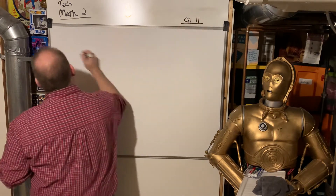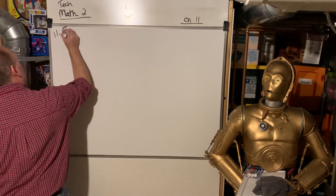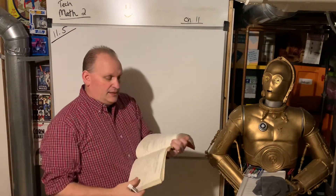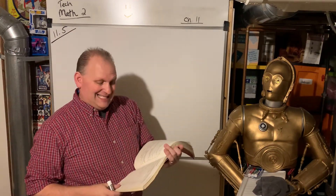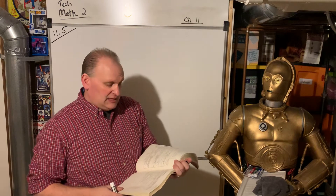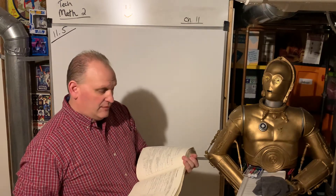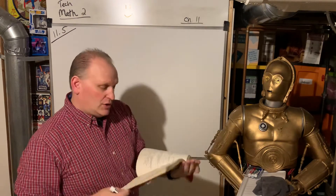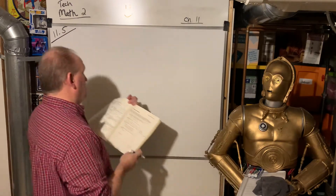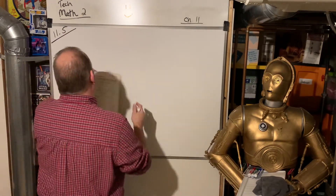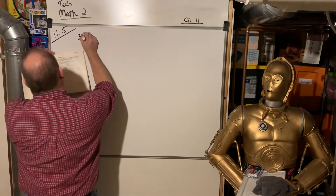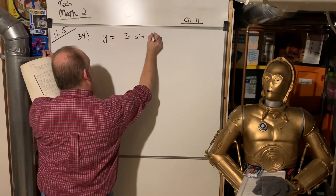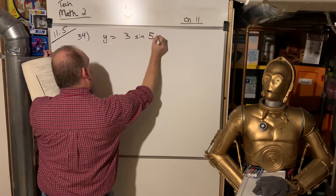So 11.5, we're talking about sine waves — specifically sine wave harmonics. Let's take a look at number 34 on page 489 in the Red Book. They have y equals 3 sine 5 theta.